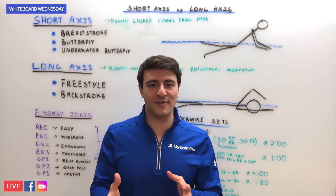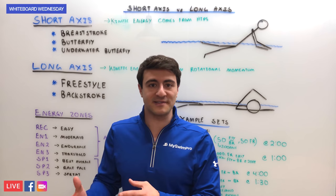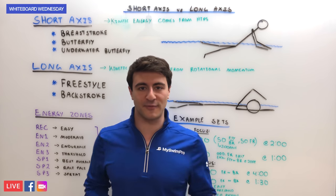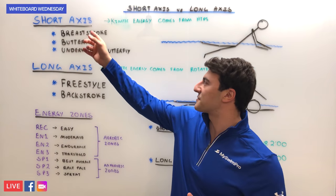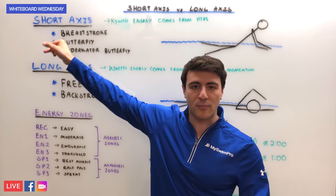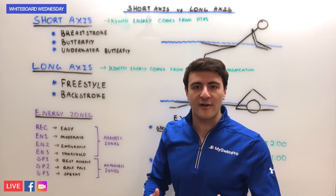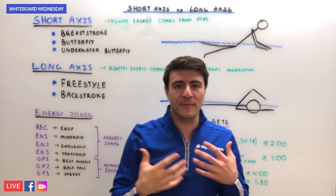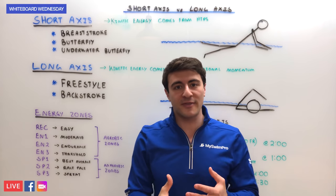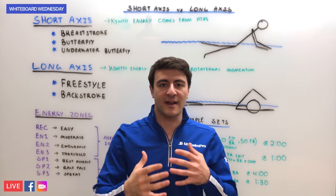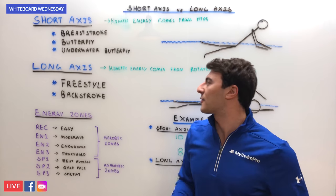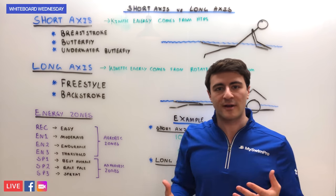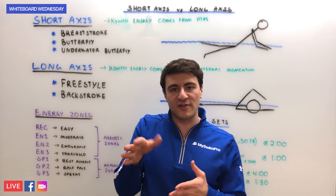The key differentiator between a short axis and a long axis stroke is where the kinetic energy actually comes from. In a short axis stroke — which includes breaststroke, butterfly, and underwater dolphin kick — the kinetic energy comes from your hips. In a long axis stroke — freestyle and backstroke — the kinetic energy comes from rotational momentum.